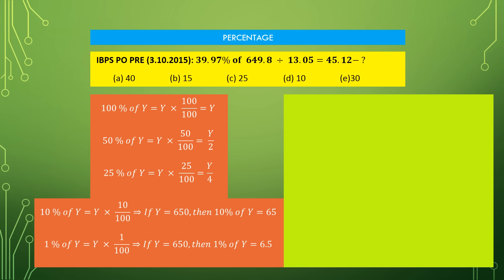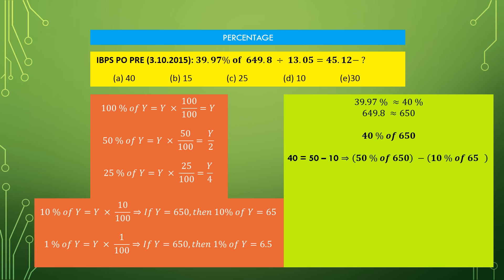Let us try to calculate the first question. We have to calculate 39.97%, which can be approximated as 40%, of 649.8, which can be approximated as 650. So we have to calculate 40% of 650. The first method: 40% of 650 equals 50% of 650 minus 10% of 650. 50% of 650 is 325, and 10% of 650 is 65, so the result is 325 minus 65 equals 260.